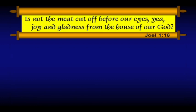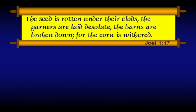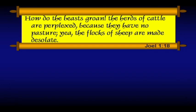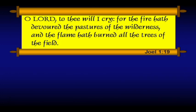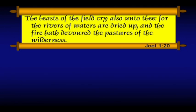Moving on in Joel, verses 16 through 20: 'Is not meat cut off before your eyes? Yea, joy and gladness from the house of our God. The seed is rotten under the clods; the garners are laid desolate; the barns are broken down, for the corn is withered. How do the beasts groan! The herds of cattle are perplexed because they have no pasture. Yea, the flocks of the sheep are made desolate. O Lord, to thee will I cry, for the fire hath devoured the pastures of the wilderness and the flame hath burned all the trees of the field. The beasts of the field cry also unto thee, for the rivers of waters are dried up.' Joel is contrasting this devastation — unbelievable devastation of the locust plague — as context to talk about a devastation that is worldwide, more future, and more devastating than anything we can imagine.